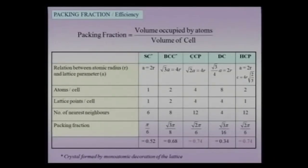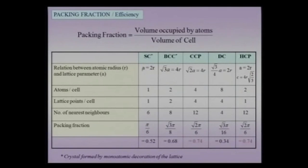Let us explore the packing fraction of the important crystals: simple cubic, body-centered cubic, cubic close-packed (FCC), diamond cubic, and hexagonal close-packed. The first step is writing the relation between atomic radius and lattice parameter. For simple cubic, atoms touch along cell edges so a = 2r. For BCC, atoms touch along the body diagonal and 4r = √3·a. For CCP, atoms touch along the face diagonal so √2·a = 4r.